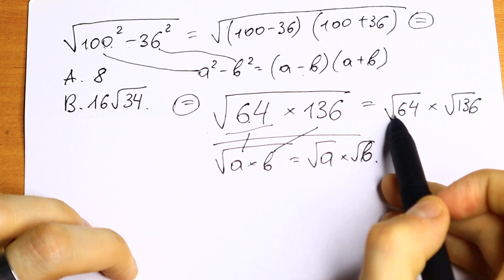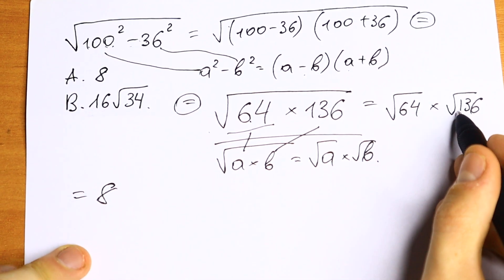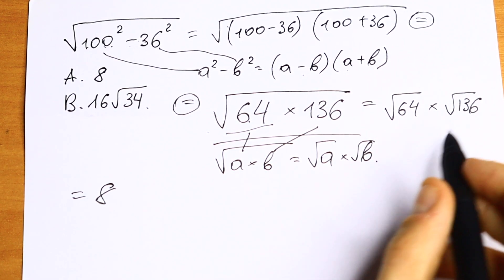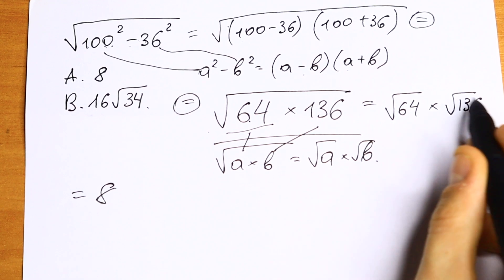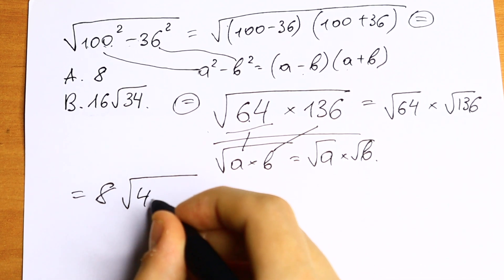Square root of 64 equals 8, and this square root of 136 we need to factor it, and we need to find the answer. The best way to factor out this 136 is to write this as 4 times 34.